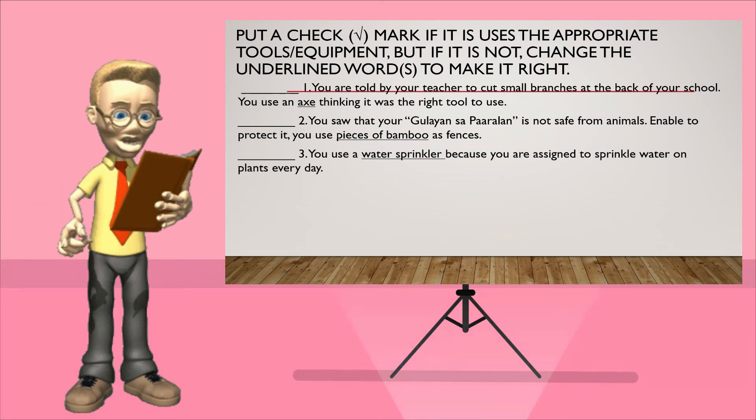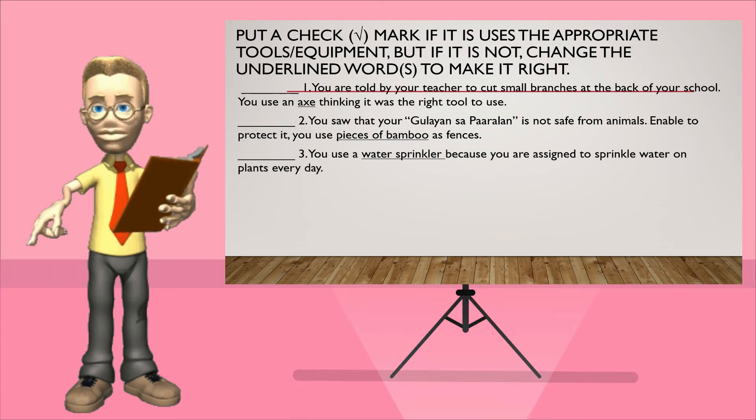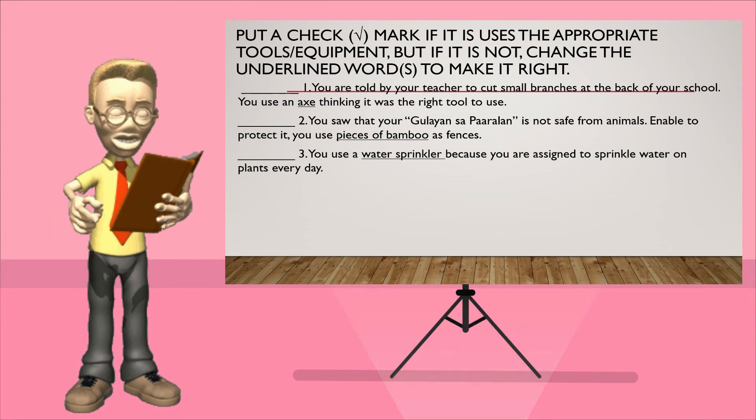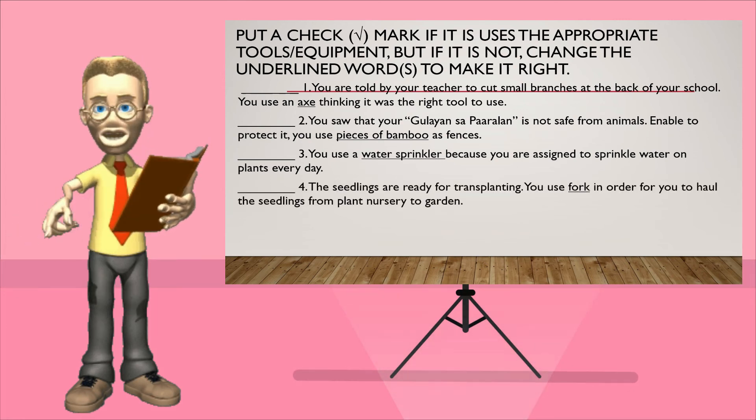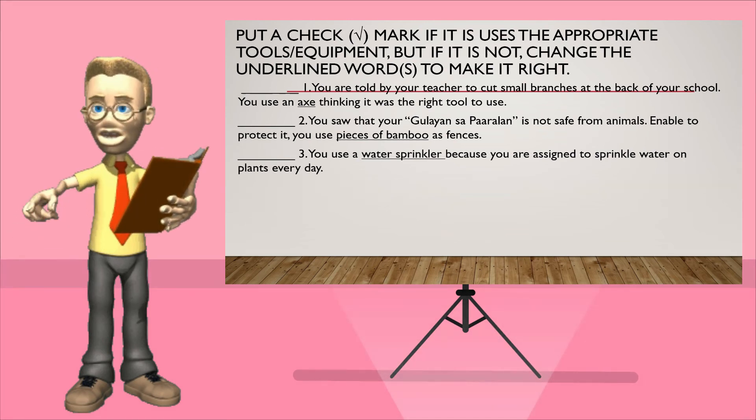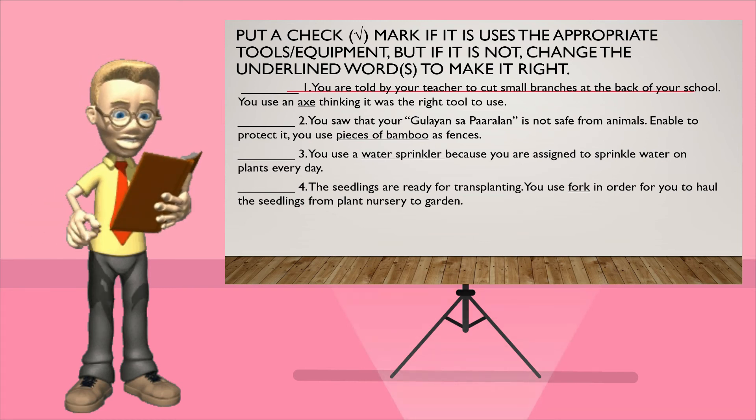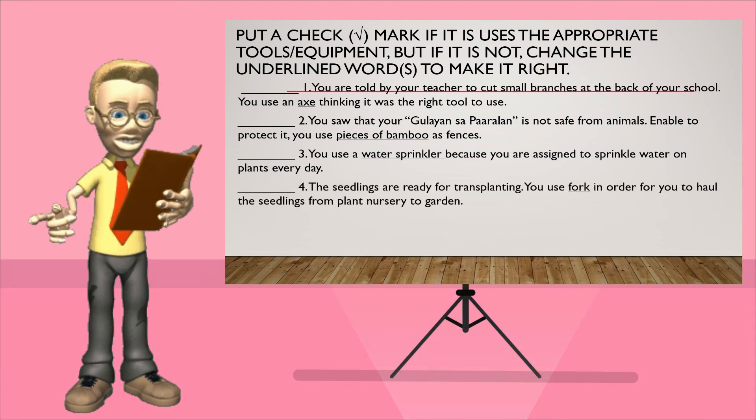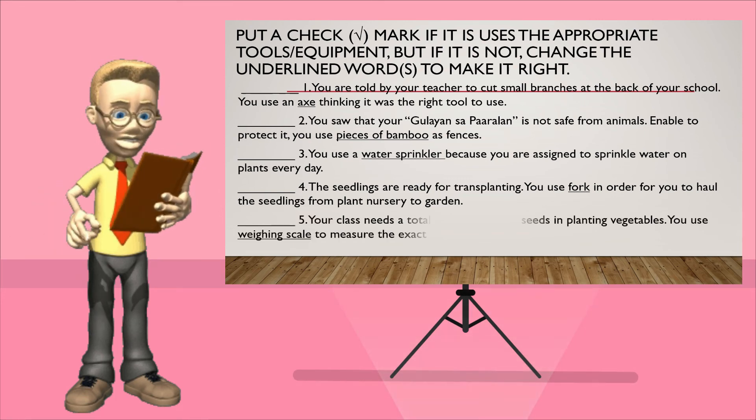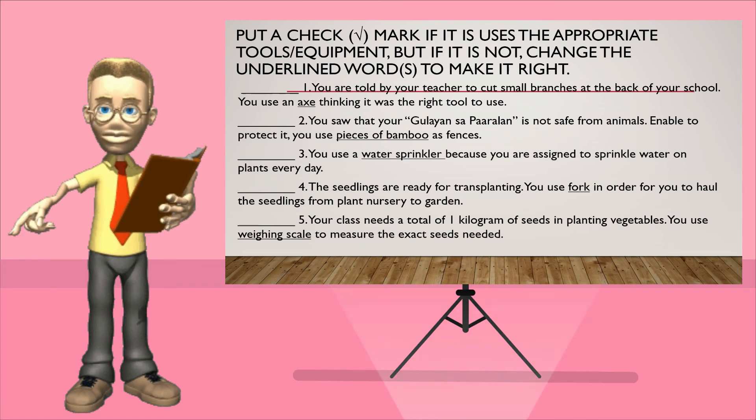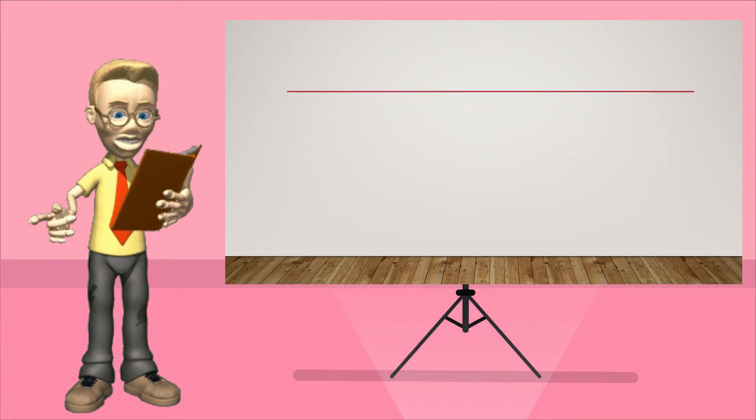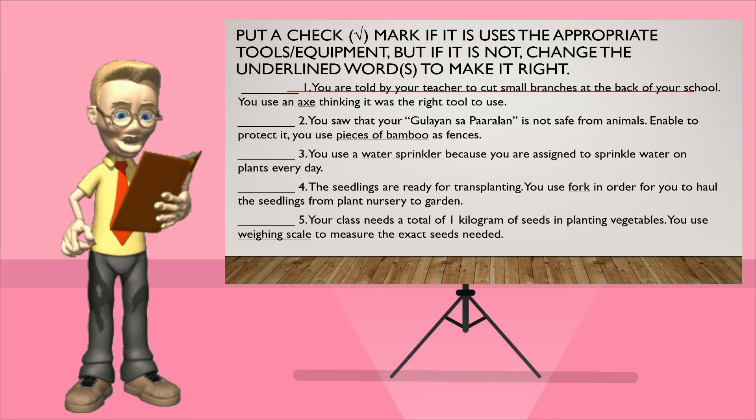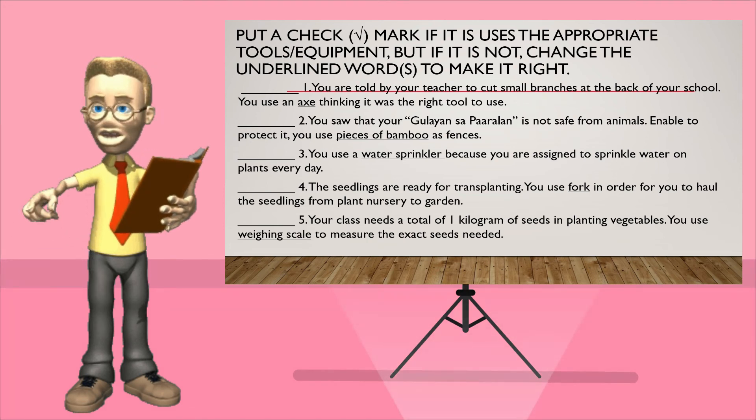Number three, you use a water sprinkler because you are assigned to sprinkle water on plants heavily. What is the correct answer? Correct. Number four, the seedlings are ready for transplanting. You use fork in order for you to hold the seedlings from plant nursery to garden. Is it checked? Number five, your class needs a total of one kilogram of seeds in planting vegetables. You use weighing scales to measure the exact seeds needed. The answer is checked.